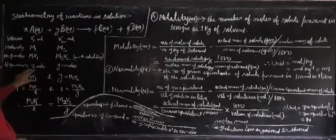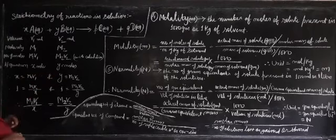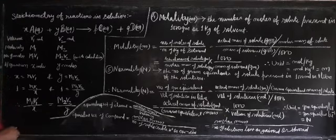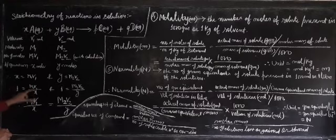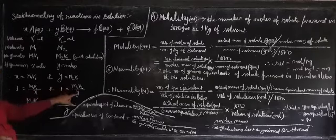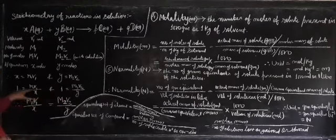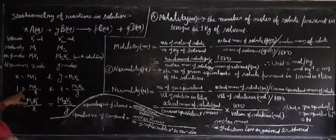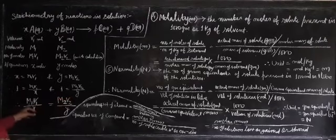So X mol = M1×V1 mol, and Y mol = M2×V2 mol. Taking X to one side gives 1 = M1V1/X, and taking Y to one side gives 1 = M2V2/Y. Both equal 1, so these two are equal to one another — finally giving us M1V1/X = M2V2/Y.